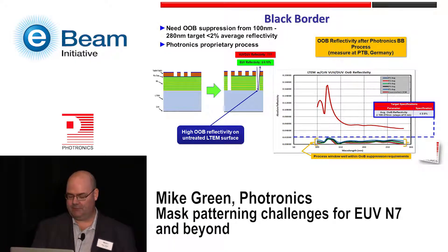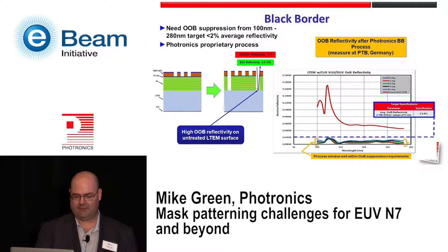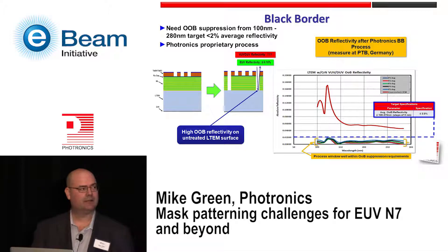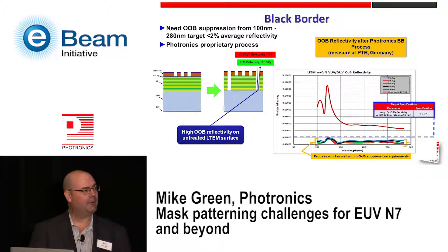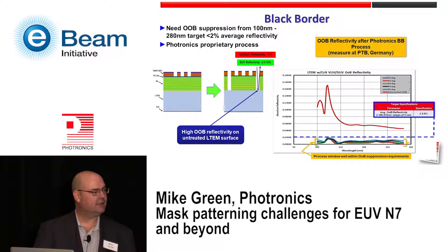The black border issue poses its own patterning challenges. The problem is that while the floor of the LTEM substrate doesn't reflect EUV, it does reflect out-of-band VUV and DUV enough to affect the litho process. We need out-of-band suppression between about 100 and 280 nanometers of less than 2%. My colleague Henry Kamberian has developed a process to do that. Here are reflectance results measured from a mask with the proprietary Photronics process, measured at PTB Germany — the bare LTEM reflectance through wavelength at four different points on the mask is below 2% across the range.